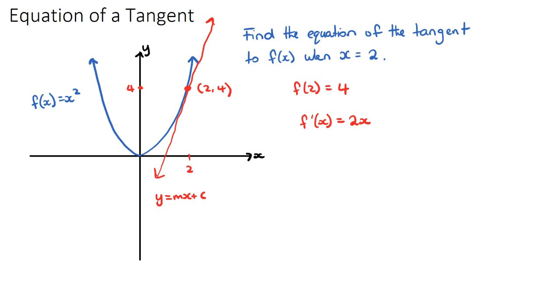So the first derivative helps us find gradients on curved lines, the slopes on curved lines. We want to find the slope at this exact point here because that will be the slope of our tangent. That exact point has the x value of 2, so if I sub in 2 into my derivative I'll get 2 times 2 which is 4.